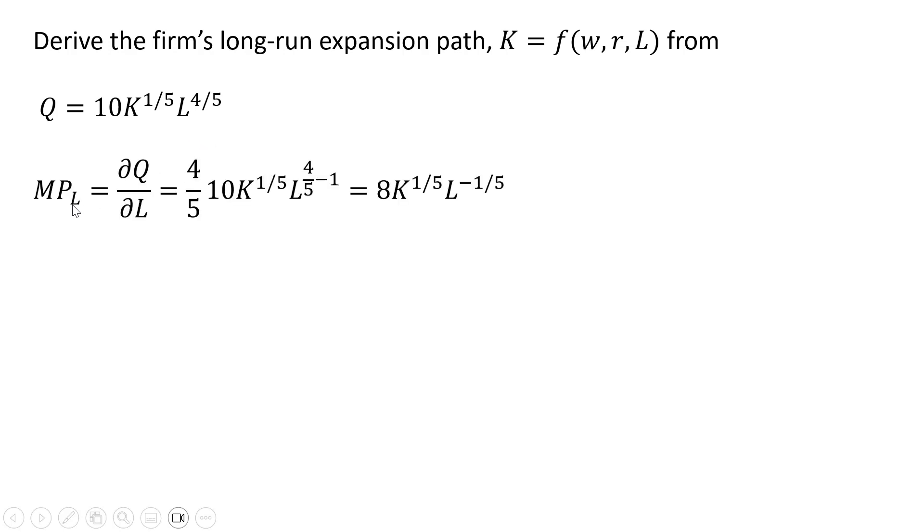First thing we'll do is get the marginal product of labor, taking the partial derivative of this production function with respect to L. We're going to bring the four-fifths down in front here, and then we're going to subtract 1 from this exponent on the L term. So four-fifths times 10 is 8, and four-fifths minus 1 here in the exponent leaves us with L raised to the minus one-fifth power.